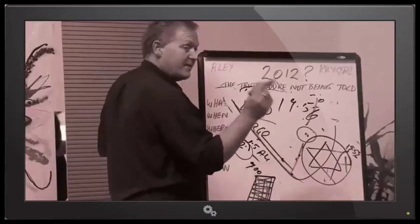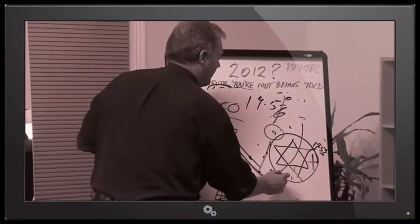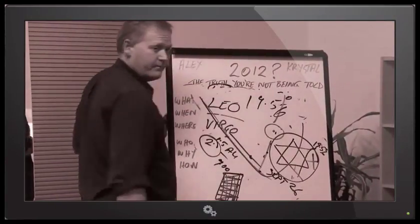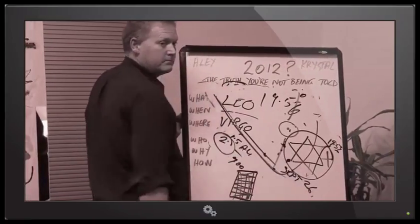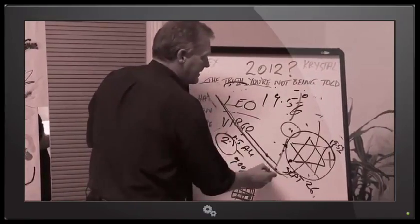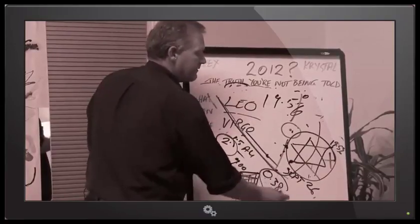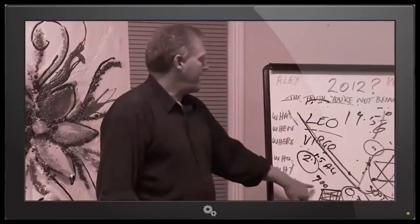The next alignment happens on September 26th this year, and it is between us and the Sun. At that point, it is 0.38 away from us. When it was 2 away, we had a magnitude 9 earthquake.